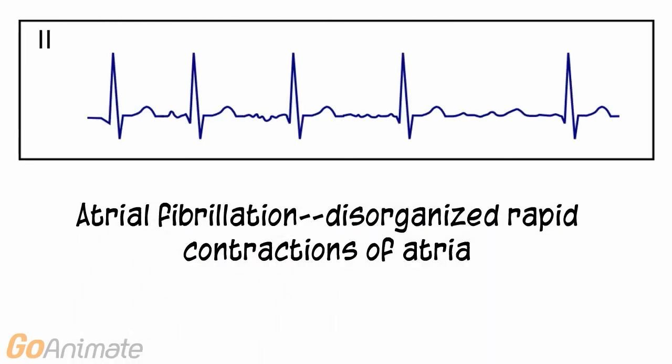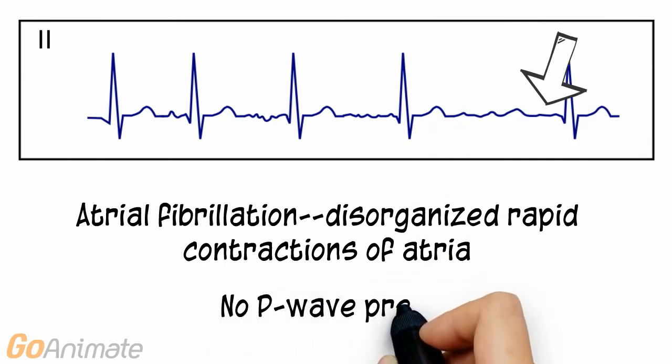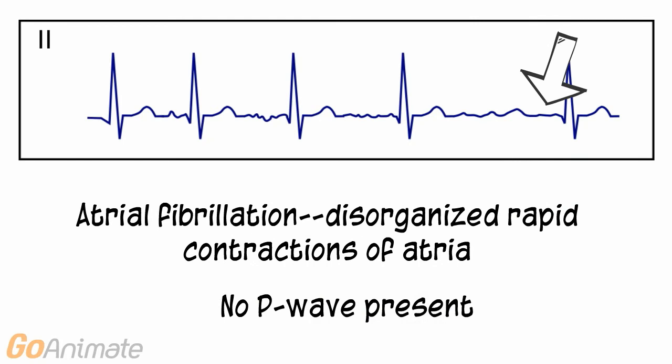Atrial fibrillation consists of disorganized rapid contractions of the atria. There are no P waves present in atrial fibrillation.